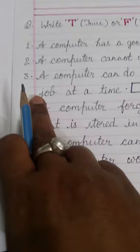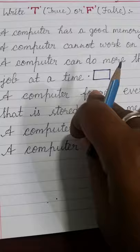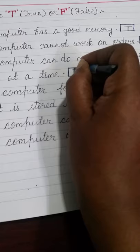Three: A computer can do more than one job at a time. Computer ek saath mein ek se zyada kaam kar sakta hai. It is true, yani ki ye sach hai.